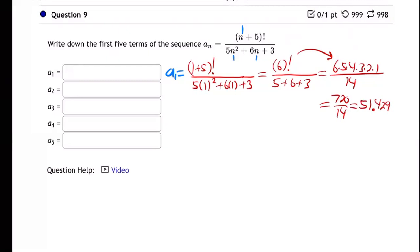51.429. I don't know if they will take a decimal on this or not, let me see real quick. Yeah, they'll take a decimal, so you could just give them a decimal if you want, or a fraction either way. So there's the first one: 51.429. Okay, now the next term.